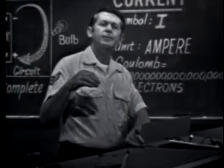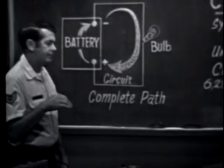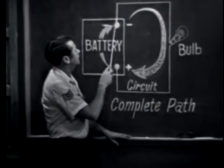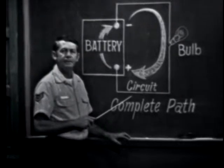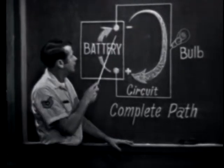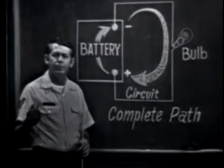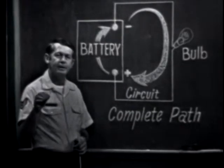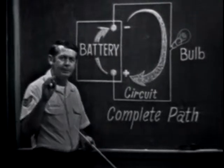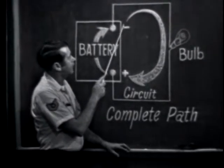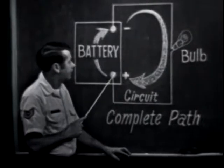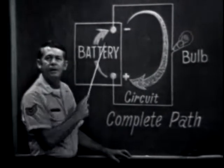Now remember, when I speak of current flowing from negative to positive, I'm referring to the current that flows outside the power source — the current in the external circuit. Inside the power source, the battery in this case, current flows from positive to negative. This is a very important point, so be sure that you understand it, because later on you'll be using the current in this power source to calculate numerous things. Current flows in a continuous path from negative to positive in the external circuit, and from positive to negative in the power source.